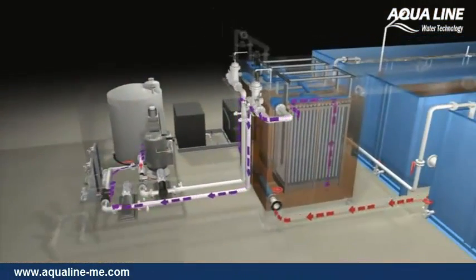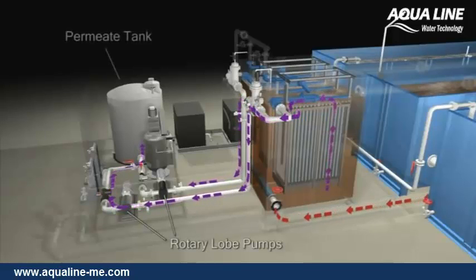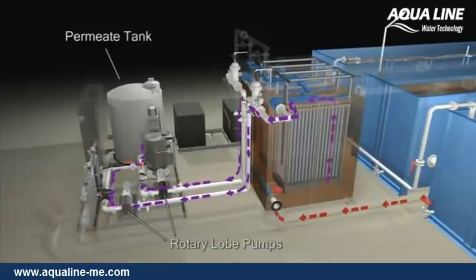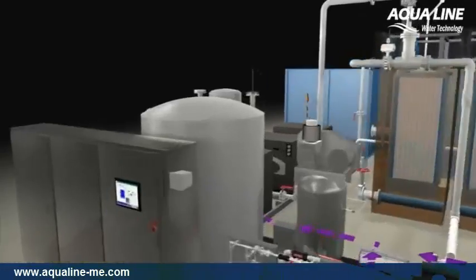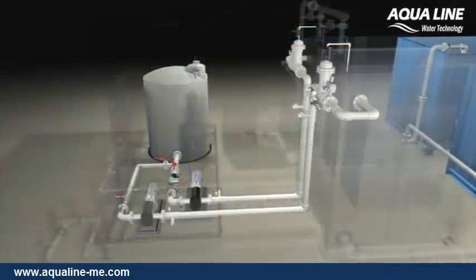The membrane system is equipped with rotary lobe pumps that create suction inside the hollow fibers and draw water through the fiber wall to the permeate collection tank. A programmable logic controller (PLC) automatically controls the filtration and membrane cleaning operations, while a human-machine interface continuously monitors system performance. The PLC is Ethernet-capable to interact with other plant PLCs or SCADA systems.